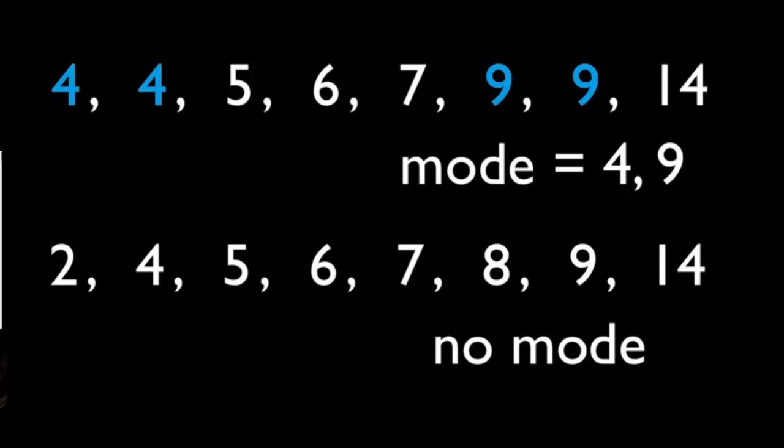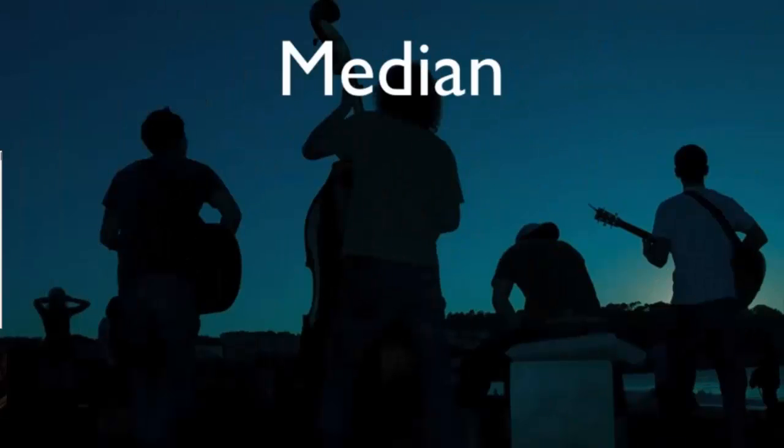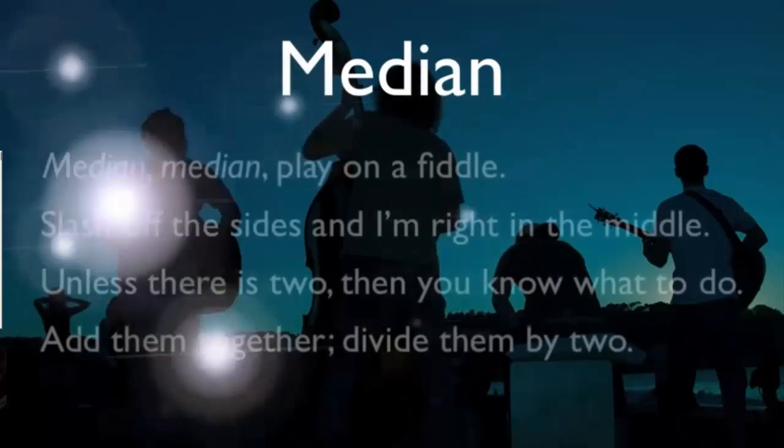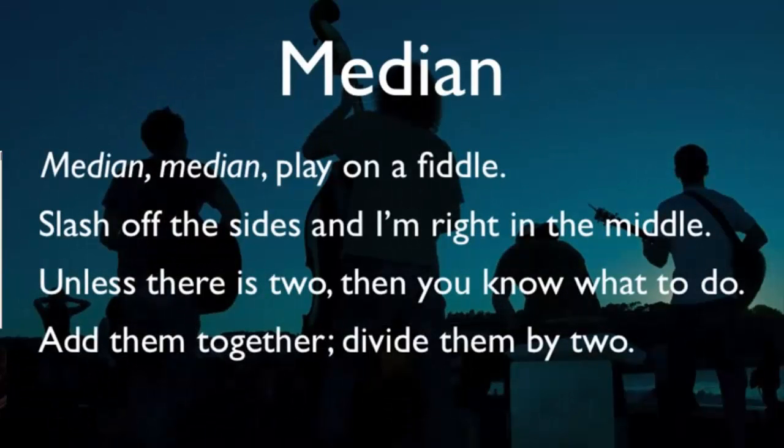All right, now we're ready for my favorite, median. Median, median, play on a fiddle. Slash up the sides, and I'm right in the middle. Unless there's two, then you know what to do. Add them together, divide them by two. How about one more time? Median, median, play on a fiddle. Slash up the sides, and I'm right in the middle. Unless there's two, then you know what to do. Add them together, divide them by two.